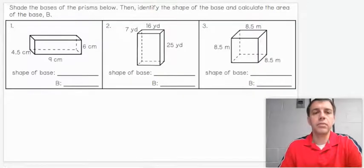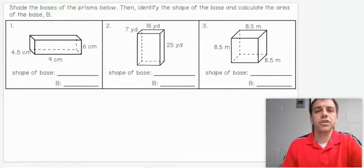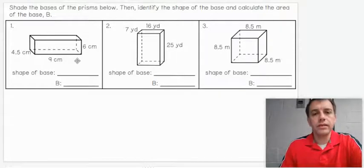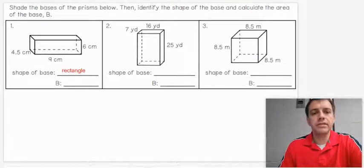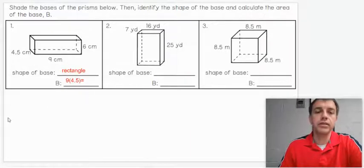Let's take a look at this and break it down. What's the shape of the base on this? What shape is this object sitting on? Hopefully you say a rectangle. Shape of the base is a rectangle. So our capital B base is going to be 9 times 4.5. We have a length and a width, so length times width would be the capital B for base.